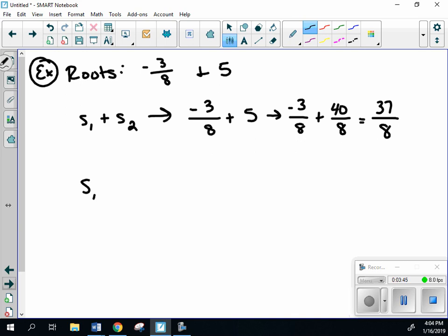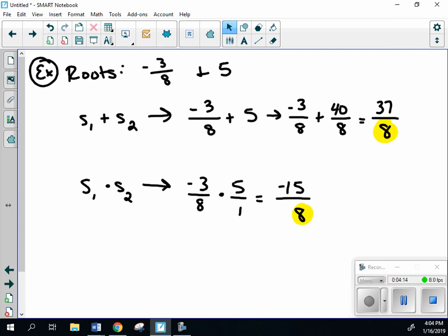Next, s₁ × s₂: -3/8 × 5/1. Multiply straight across to get -15/8. Key point: many people miss this—the denominators must be the same. If not, convert your fractions because a depends on it. Our denominators are the same, so a = 8.